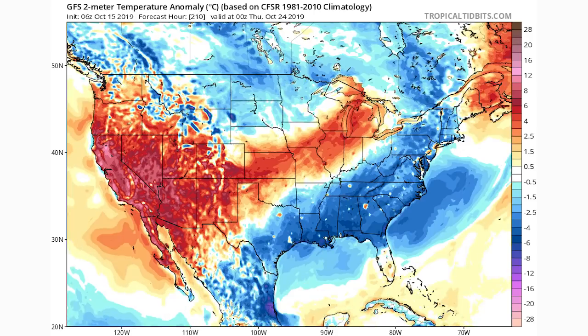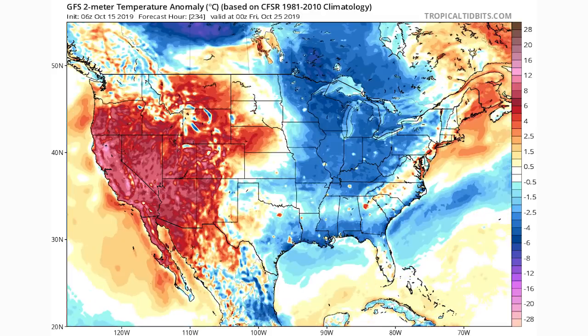Thursday October 24th: it is cold in the eastern United States as a whole, with a brief warm area in the central US up through the Great Lakes, which should be very short-lived. By Friday October 25th, cold has fully entered the eastern United States — the Great Lakes and east coast are below normal temperatures. There are some isolated regions of warmth along the east coast, but for the most part we have very cold temperatures for the east and very warm temperatures for the west.